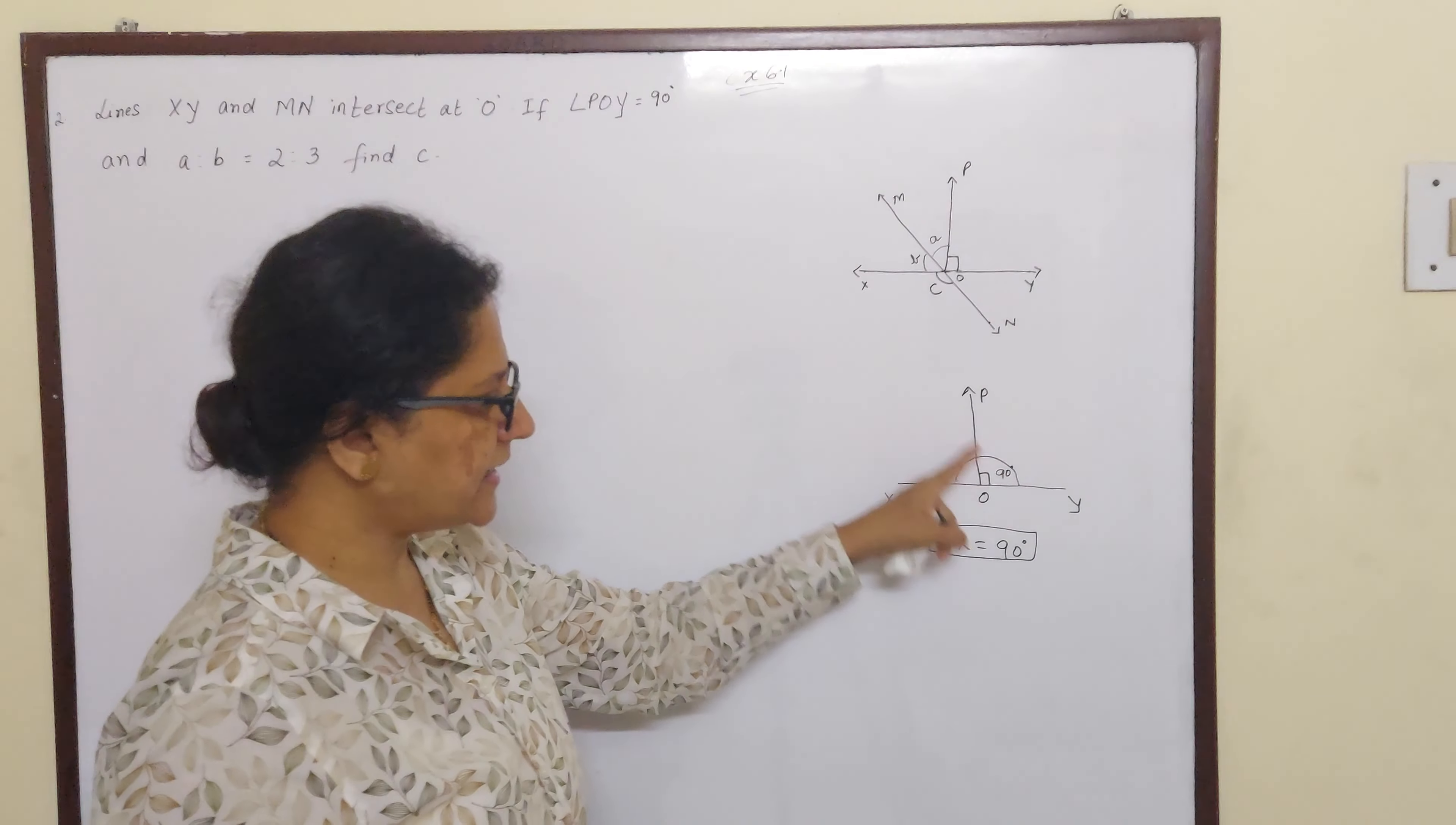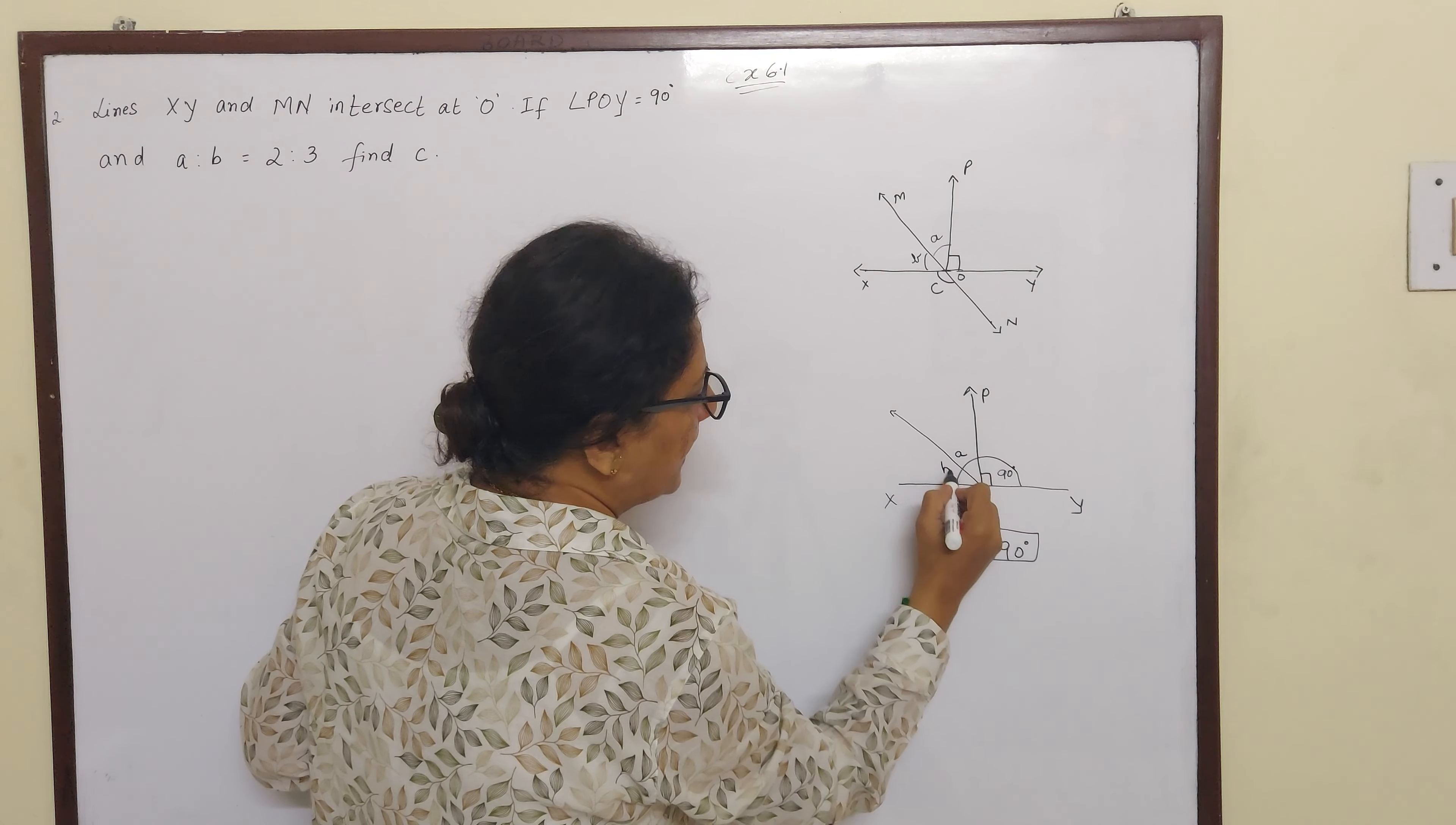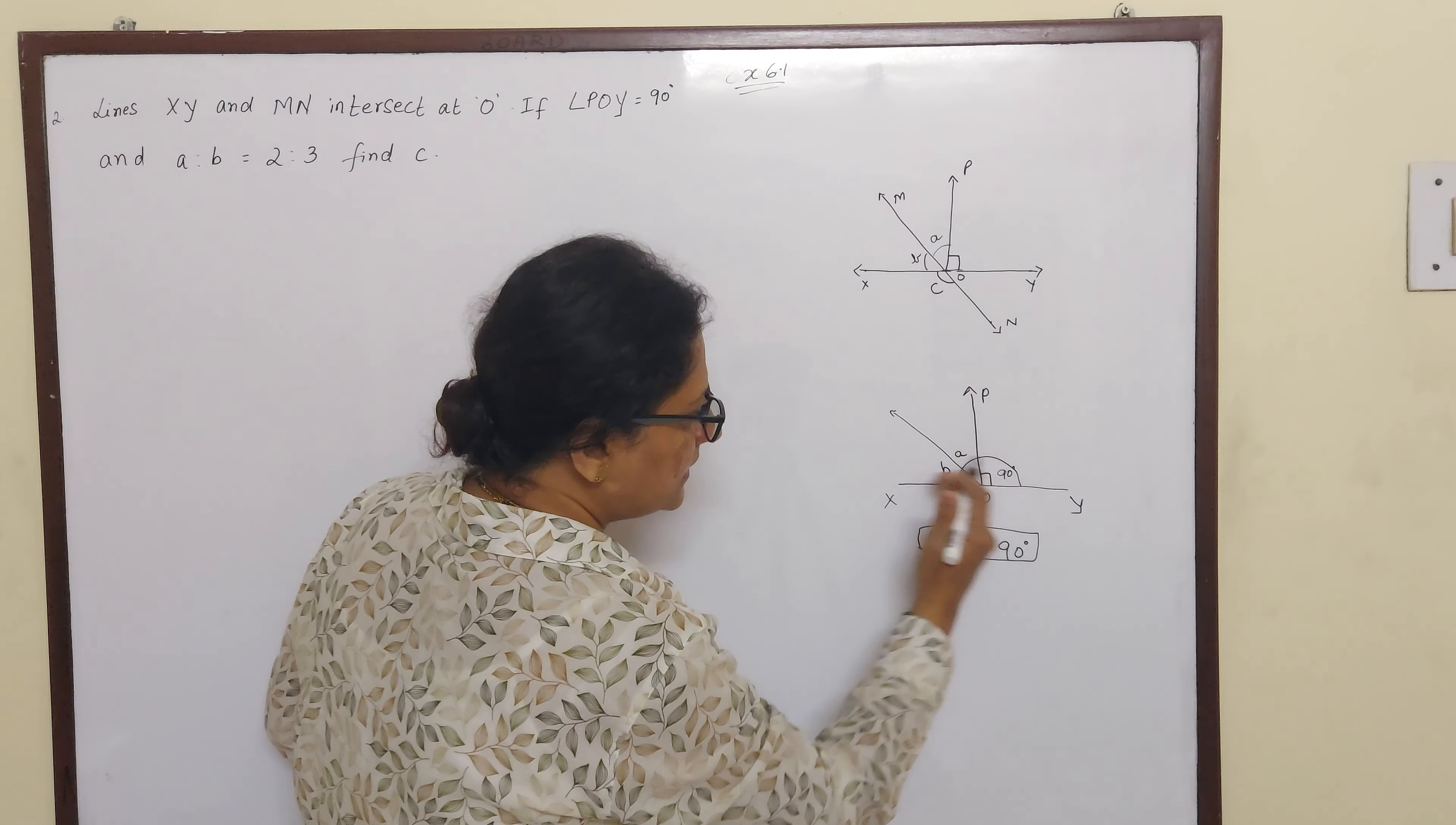If this is 90 then POX is also 90. Now what they have done is they have inserted a ray here and put as A and B. That means angle A plus angle B will give you 90 degrees because they are in the left hand side.